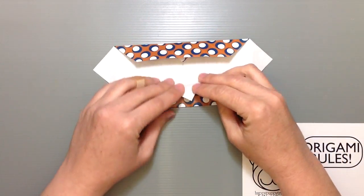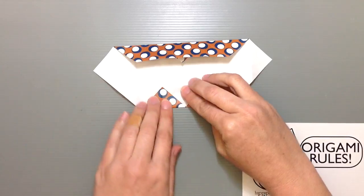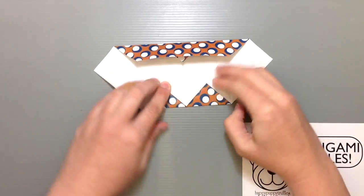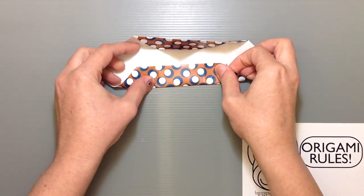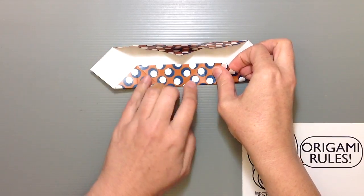Then go ahead and turn it around and do the same thing on this side too. And then fold up again. Try to keep things as straight as you can.